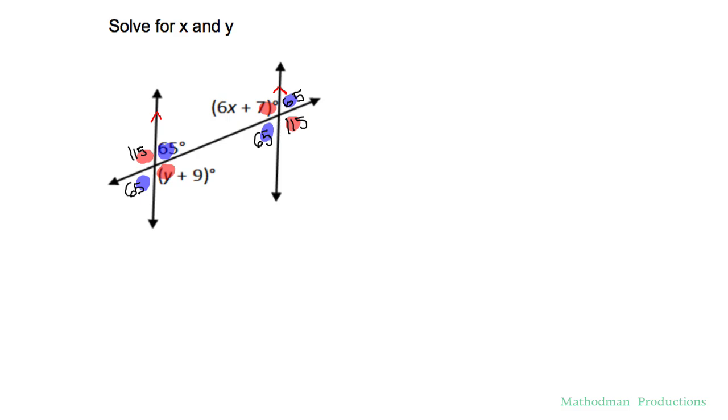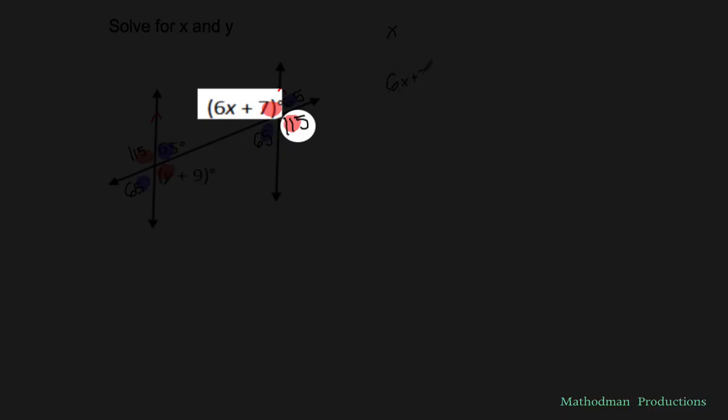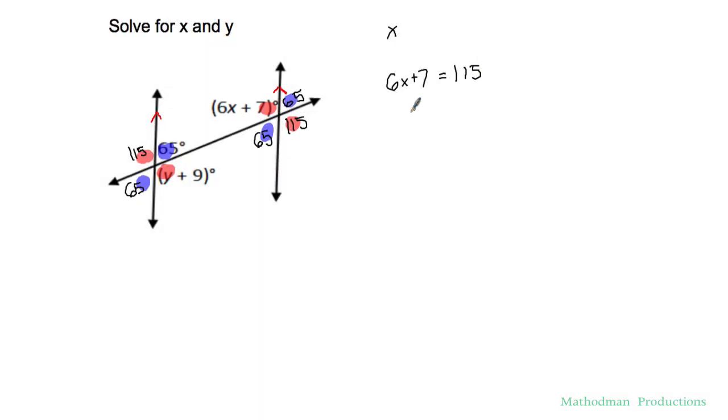Start solving for x and y letter by letter. 6x plus 7. That's going to equal 115 because they're the same color and then solve away. Minus 7 minus 7. You got 6x equals 150 minus 7 which is 108 and then divide both sides by 6 and you got x equals 18. Easy day.